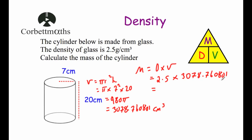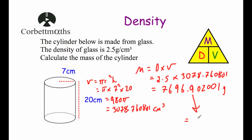The mass of the cylinder equals density times volume. I've kept that value in my calculator display, so I just press times 2.5 and I get 2450π, or pressing the SD button gives 7696.902001. Because the density was in grams per centimeter cubed, this is measured in grams. Personally I would convert this to kilograms — so approximately 7.697 kilograms, or rounded to 7.7 kilograms, depending on what the question asks for. And that's it.